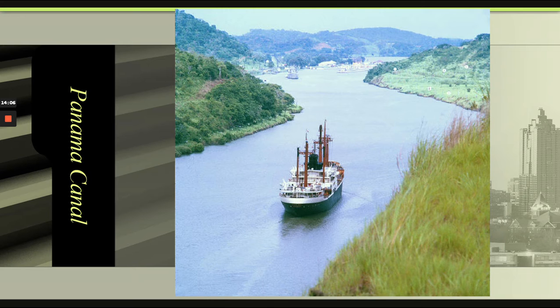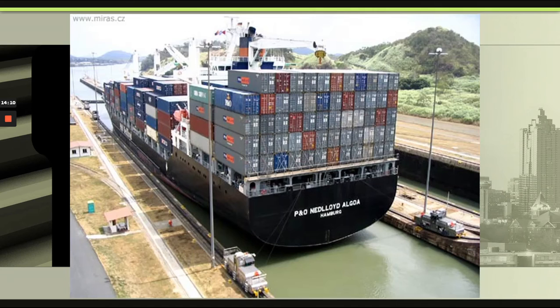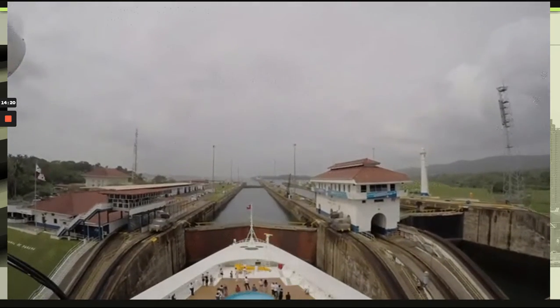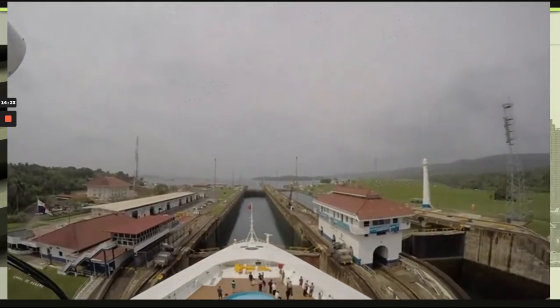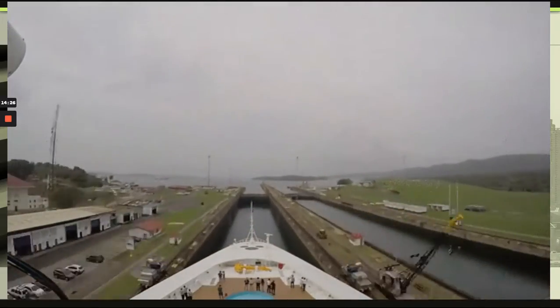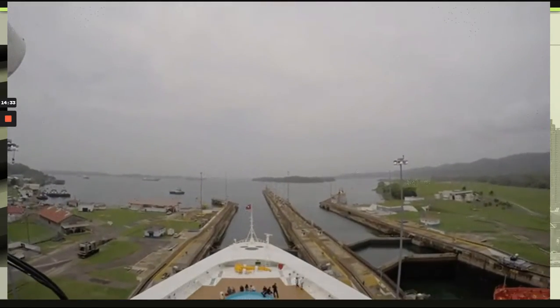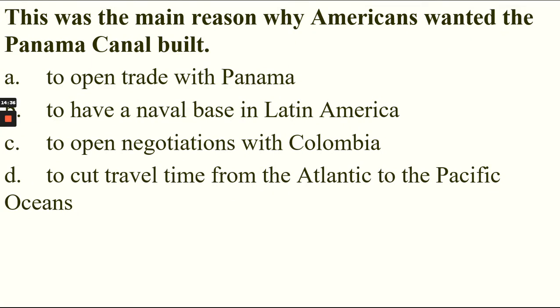The Panama Canal isn't very wide but it's wide enough for two ships. It uses a lock system — it brings ships up and then down by filling and emptying water, closing doors behind the ship before moving it forward. This was the main reason Americans wanted the Panama Canal built. Technology such as a canal makes everything faster, cheaper, and more efficient.